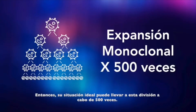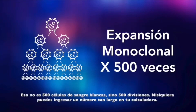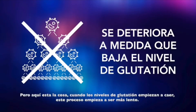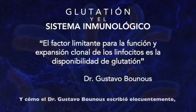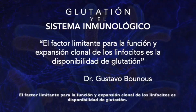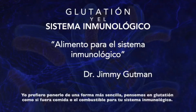And in ideal situations, this division can take place 500 times. That's not 500 white blood cells — that's 500 divisions. So you can't even fit a number that large on your calculator. But here's the thing: when glutathione levels begin to fall, this process starts to slow down. And as Dr. Gustavo Bounos so eloquently wrote, the limiting factor for the function and clonal expansion of lymphocytes, or white blood cells, is their availability of glutathione.